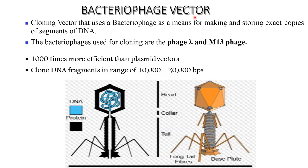Bacteriophage vectors are cloning vectors that use bacteriophages as a means of making and storing exact copies of a segment of DNA. Bacteriophages used for cloning are lambda phage and M13 phage, which are a thousand times more efficient than plasmid vectors, cloning DNA fragments ranging from 10,000 to 20,000 base pairs.